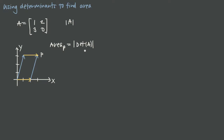In this example, taking the determinant of the matrix: 1 times 0 is 0, minus 2 times 3 is 6, giving negative 6. Taking the absolute value of negative 6 gives positive 6. So the area of this parallelogram is 6.